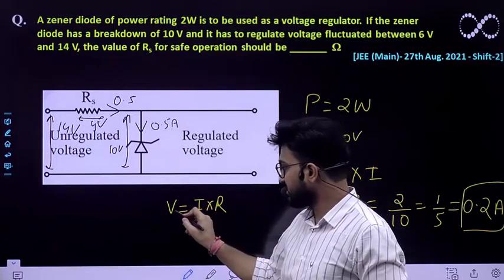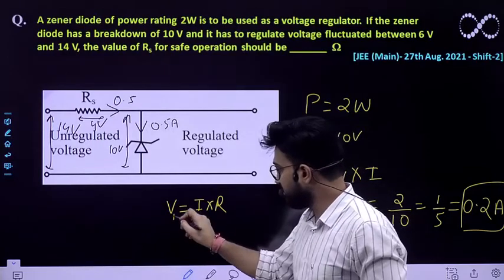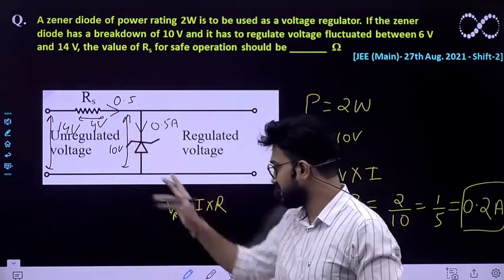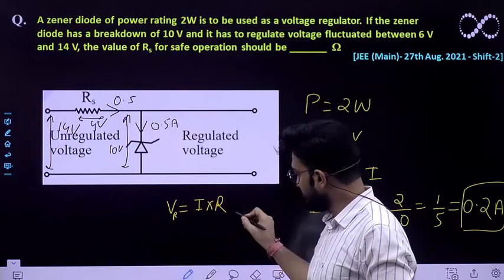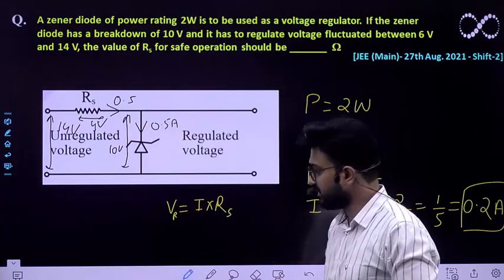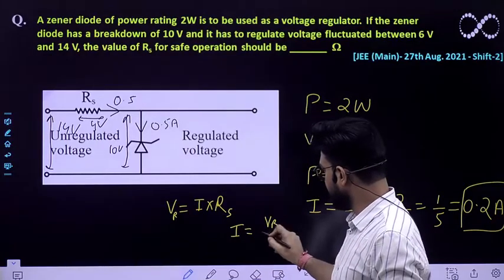For resistance, let Vr be the voltage across this resistor which is already 4 volt. Current is already given to you and Rs is what you need to find out. So I would be equal to Vr by Rs.